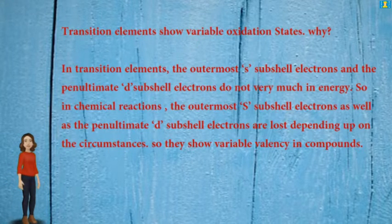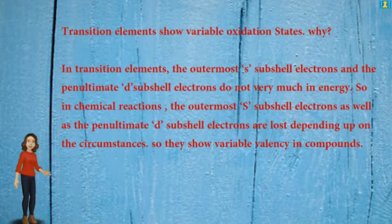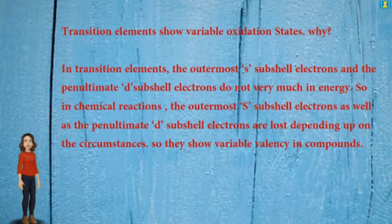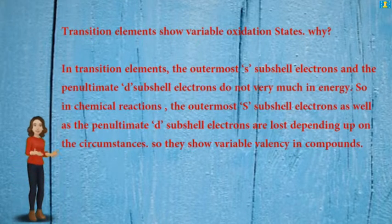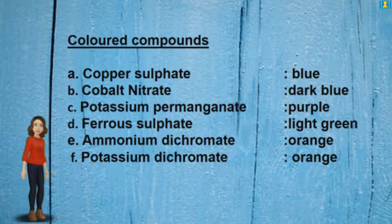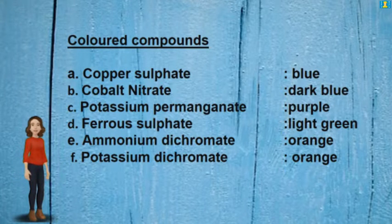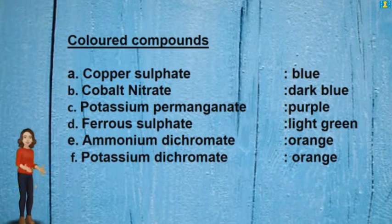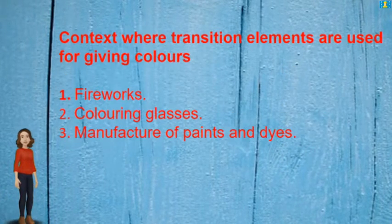Transition elements show variable oxidation states because in transition elements, the outermost S subshell electrons and the penultimate D subshell electrons do not vary much in energy. So in chemical reactions, both the outermost S subshell electrons and the penultimate D subshell electrons may be lost depending on circumstances, resulting in variable valency. Colored compounds: copper sulfate — blue, cobalt nitrate — dark blue, potassium permanganate — purple, ferrous sulfate — light green, ammonium dichromate — orange, potassium dichromate — orange.